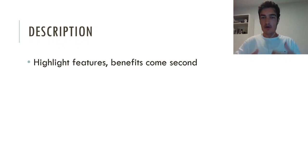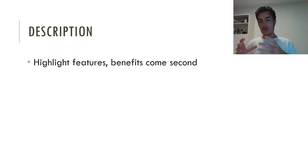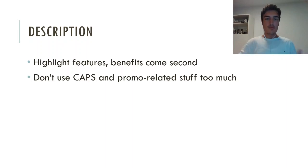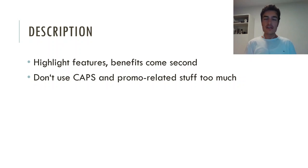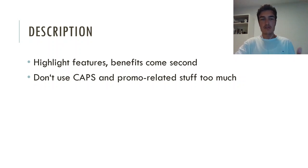In the description, you should highlight features first — benefits come second. When you're on Google Shopping, you have five or ten competitors next to your ad and the customer is comparing products. You don't have to convince them to buy — you just have to convince them that this is the right product. First of all, don't use caps all over the place or promo-related stuff like 'free shipping' or 'only three left in stock.' This looks very bad on the search engine results page and can be very harmful for your CTR and overall performance.